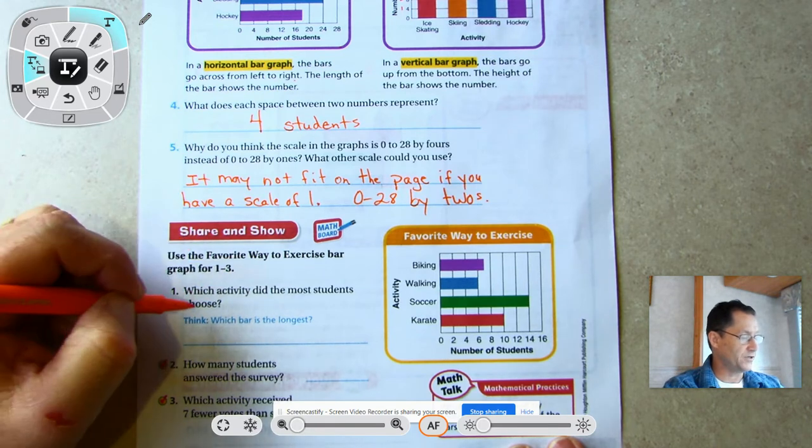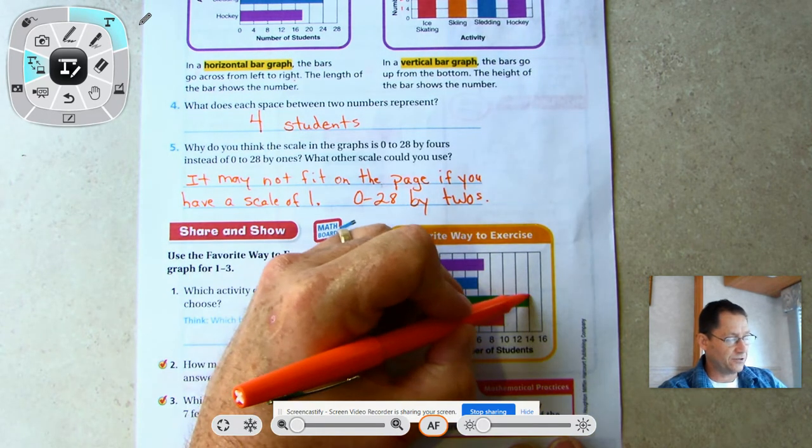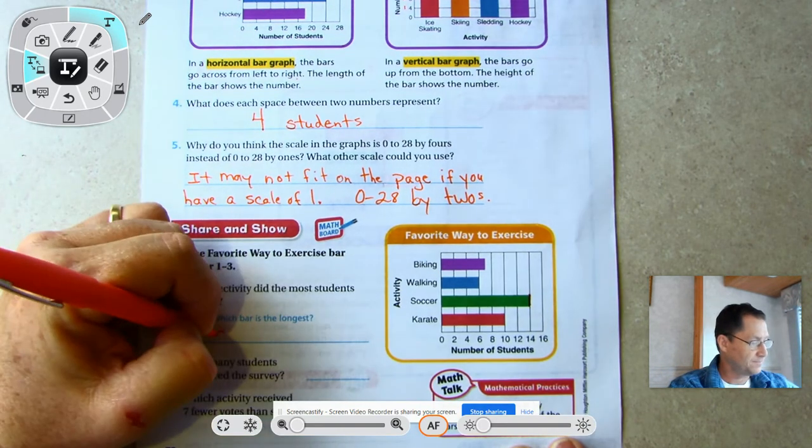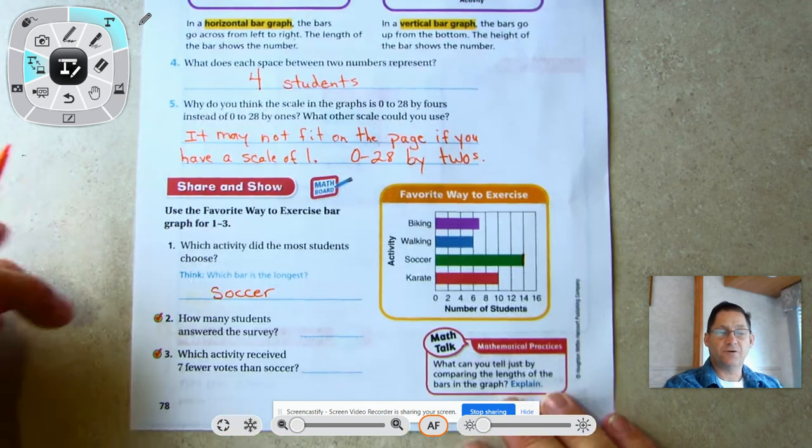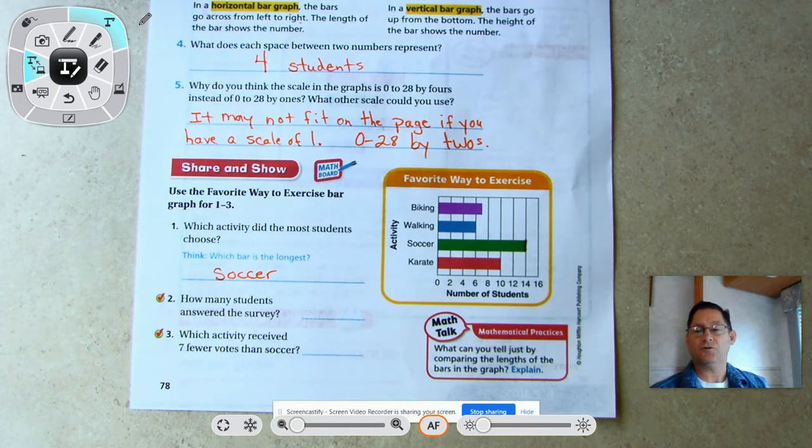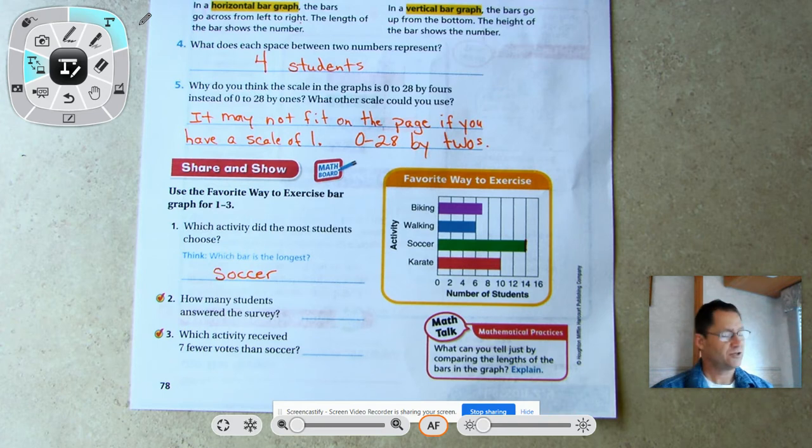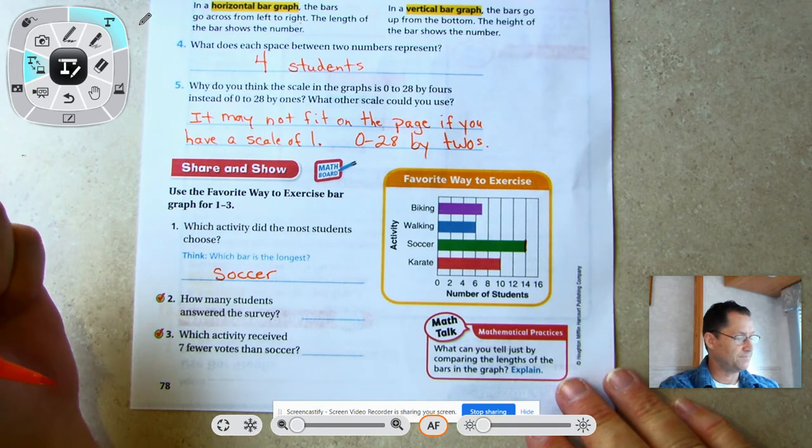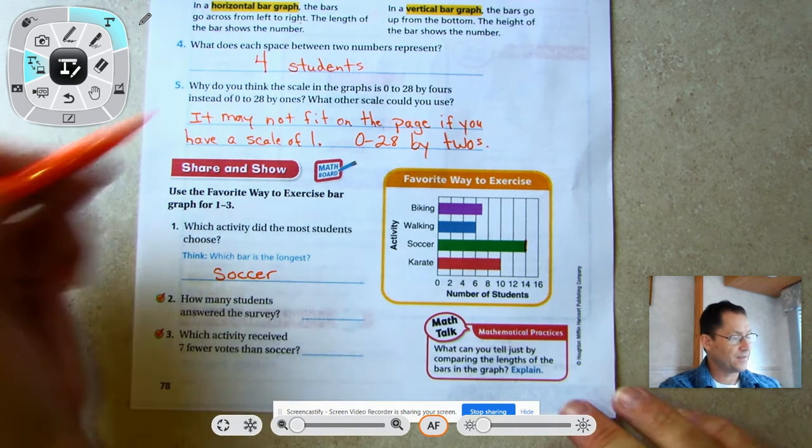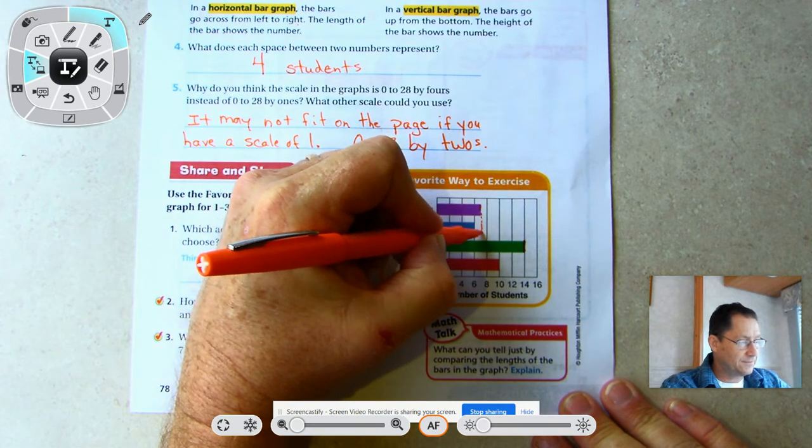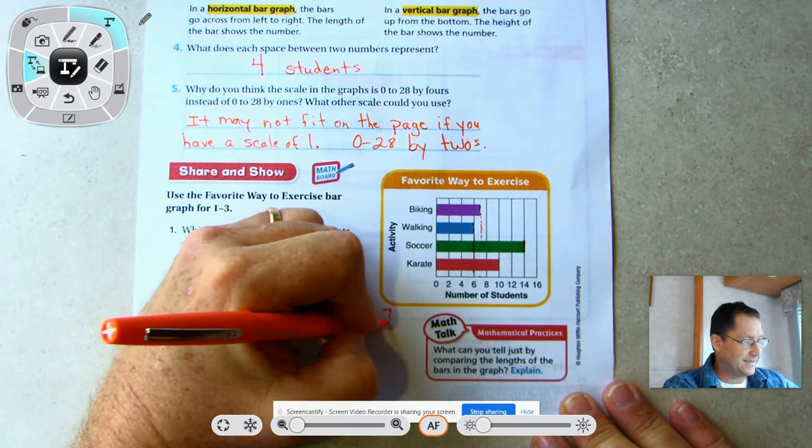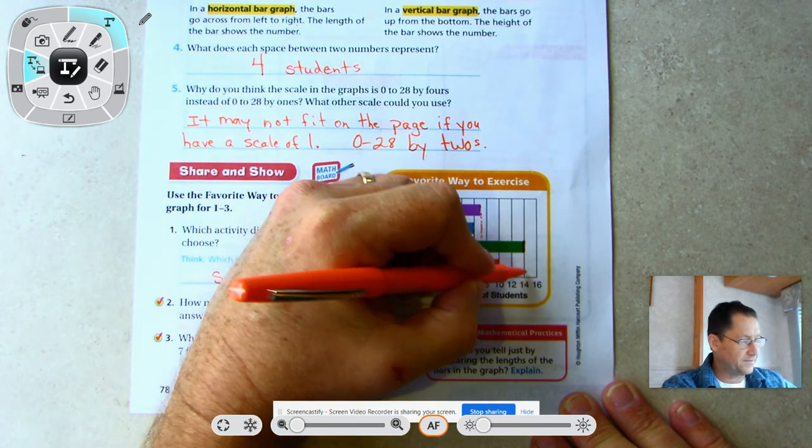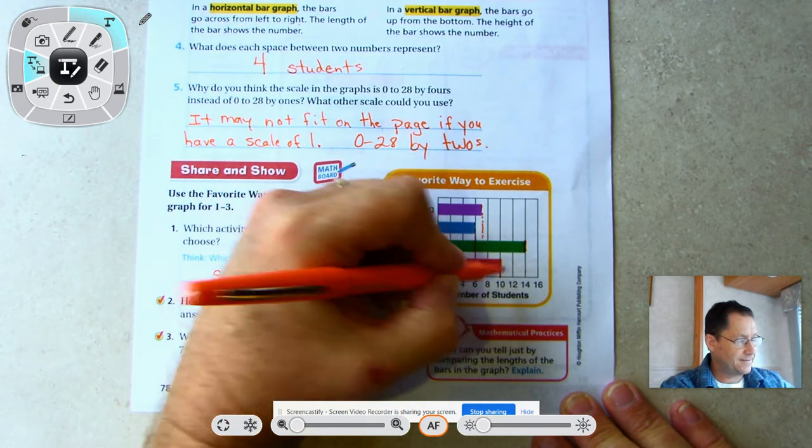Which activity did the most students choose? That's simply you just look at which one's the longest - soccer. How many students answered the survey? Survey is something where somebody asks you a question. In this case it's what's your favorite way to exercise, and the person being surveyed would give you their favorite answer.